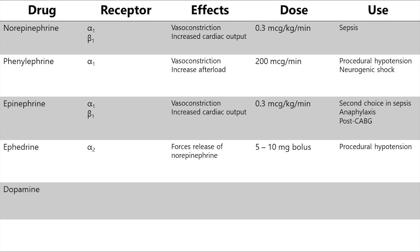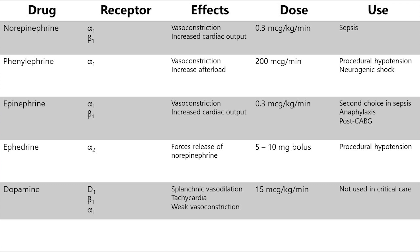Dopamine will stimulate a wide variety of receptors depending on dose. At lower doses, the D1 splanchnic receptors are activated and cause vasodilation. As you increase the dose, beta-1 receptors become more stimulated and increase heart rate. At even higher doses, alpha-1 receptors are stimulated to vasoconstrict, but this is a much weaker effect than other available medications. Dopamine is usually dosed up to 15 micrograms per kilogram per minute, but its overall use in critical care is rapidly decreasing, except in cases of bradycardia as a bridge to a pacemaker.